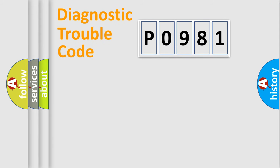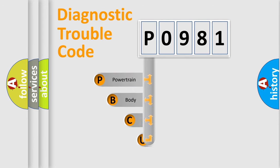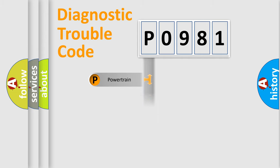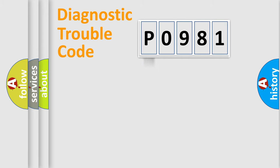Let's do this. First, let's look at the history of diagnostic fault code composition according to the OBD2 protocol, which is unified for all automakers since 2000. We divide the electric system of an automobile into four basic units: Powertrain, Body, Chassis, and Network.